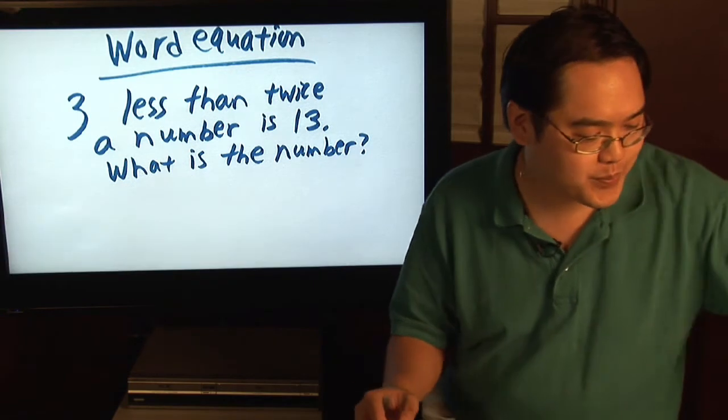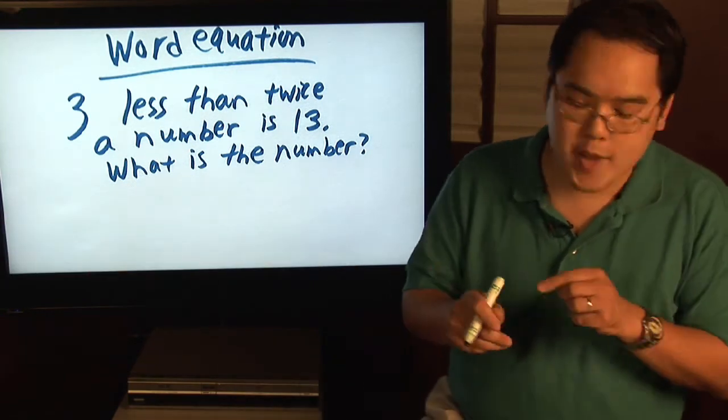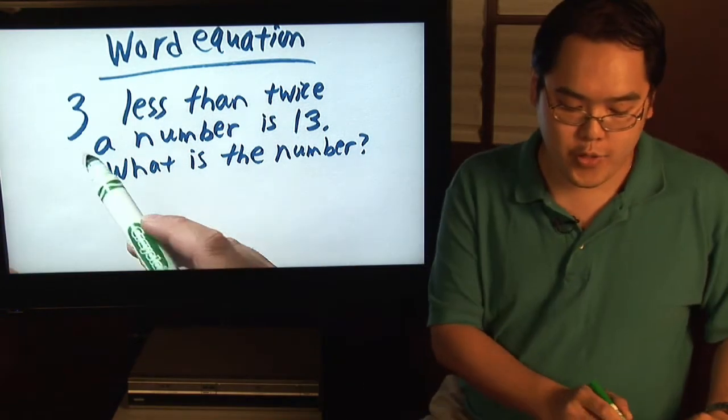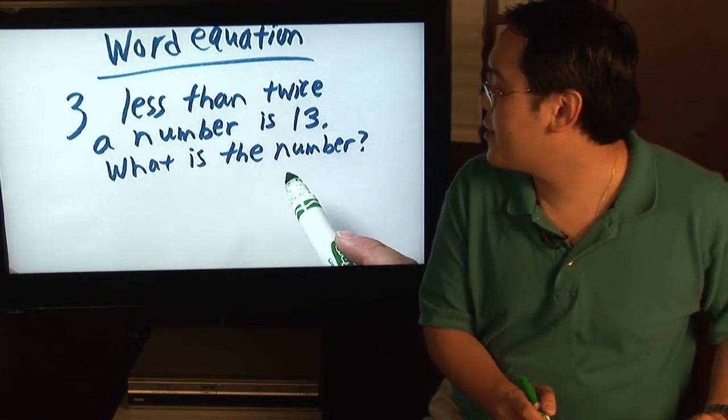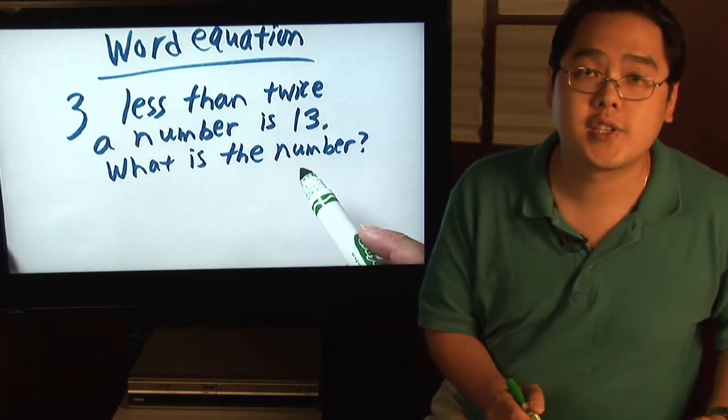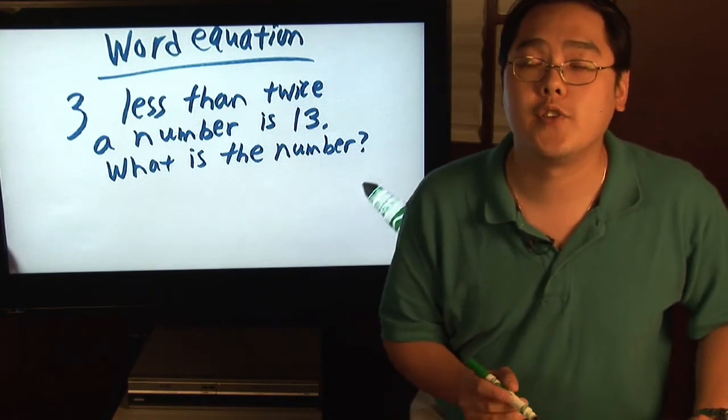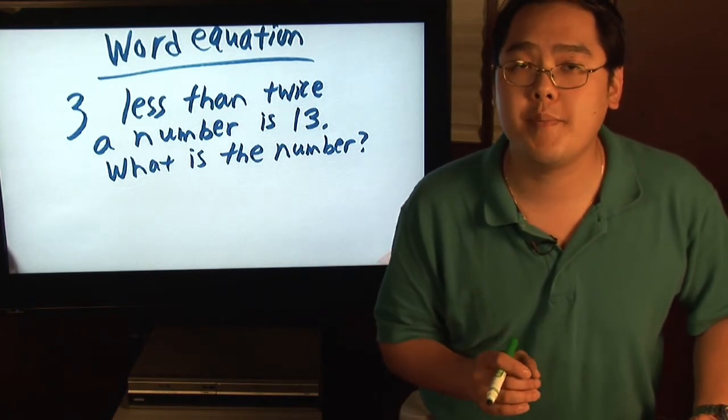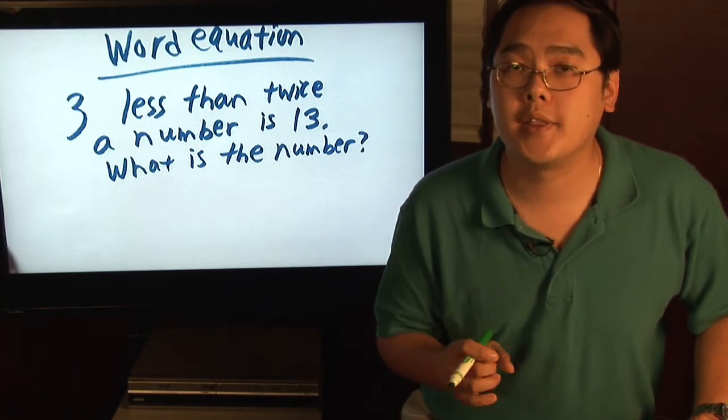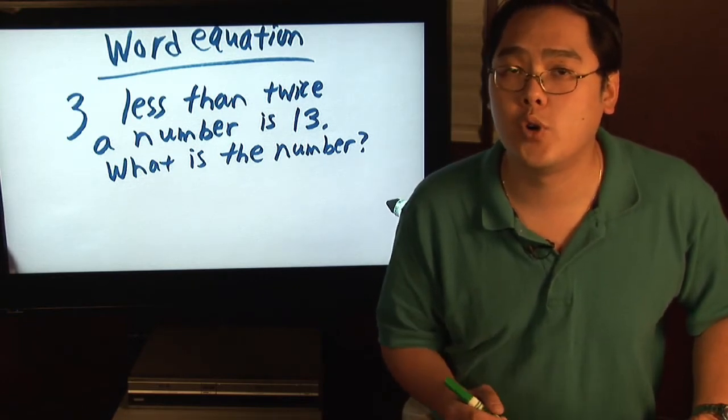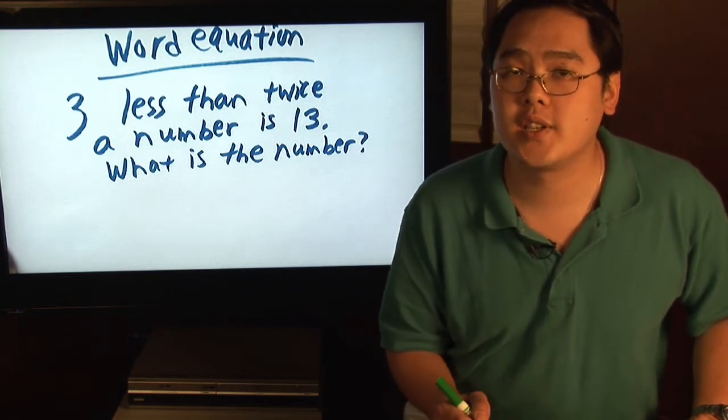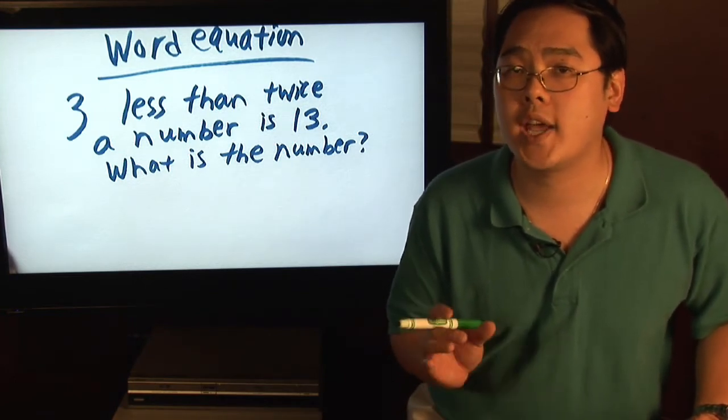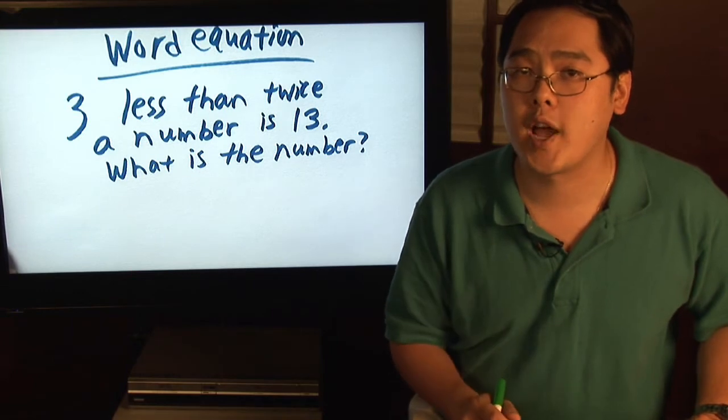For example, you have three less than twice a number is thirteen. What is the number? So first off, let's address the word problem in pieces. If you can tackle the word problem piece by piece, it's a lot less overwhelming than if you were to tackle the word problem as a whole. Often times when people read word problems as a whole, they tend to give up too quickly, but if you look at it phrase by phrase, it's going to work out much better for you.